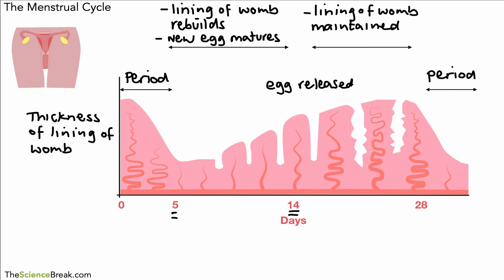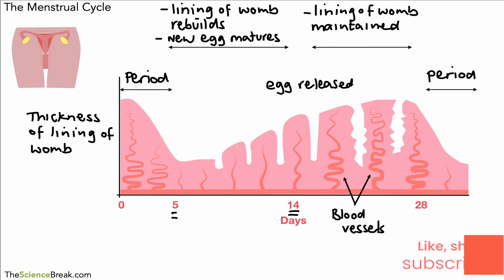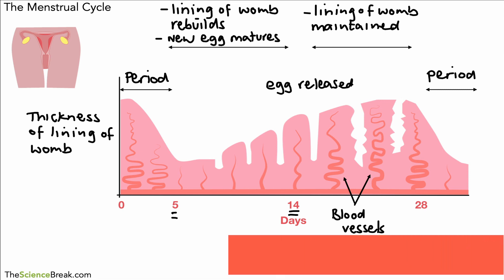So this was basically the menstrual cycle and the key bits of information you need to know. One or two people asked about the wiggly lines in the diagram — these are just showing blood vessels that provide nutrients for the lining of the womb, and you sometimes see those in a diagram. Remember there's a worksheet which you can use to work along with the video. That's it for today's video, so thank you for watching and I'll see you again soon.